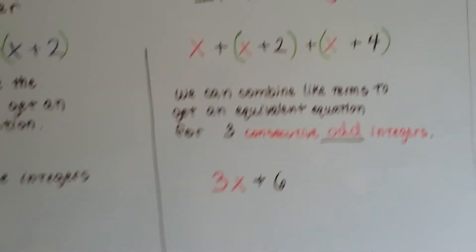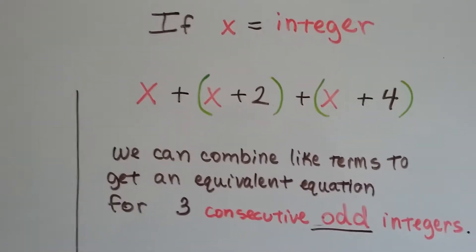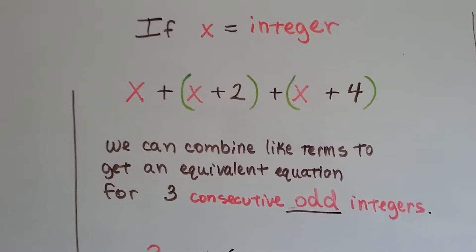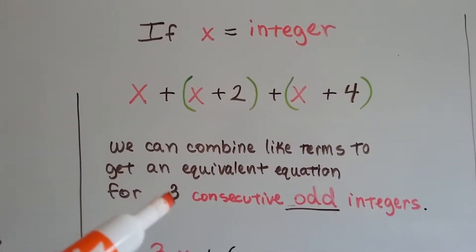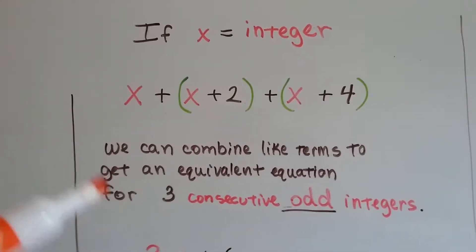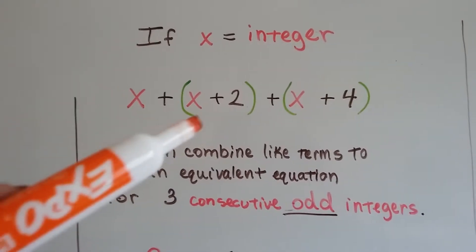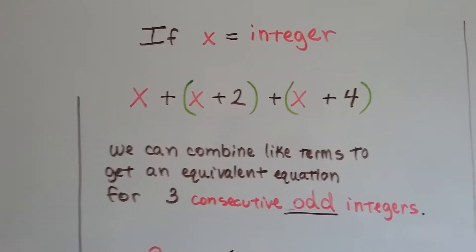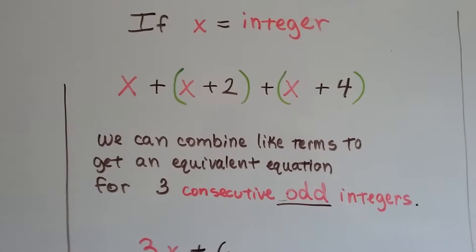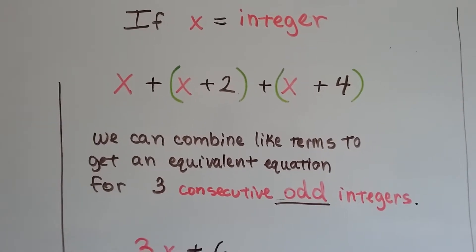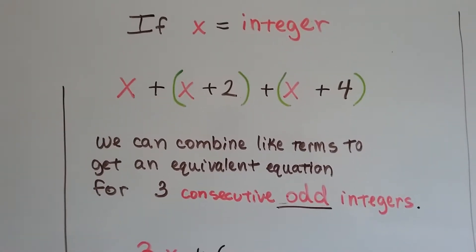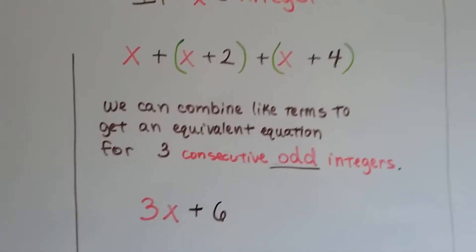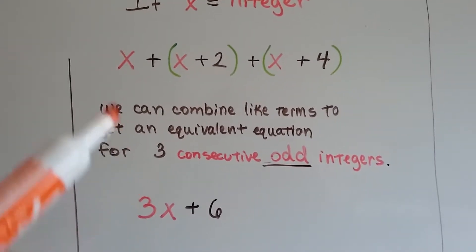If x were an integer and we were finding consecutive odd integers and we wanted three consecutive odd integers, we'd have x as the integer, x plus 2 as the next one, and x plus 4 as the next one. We can combine like terms to get an equivalent equation for these three consecutive odd integers, and we'd get 3x plus 6.